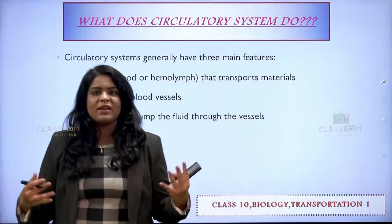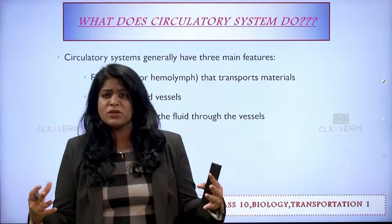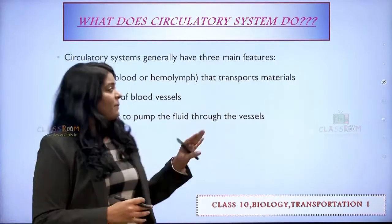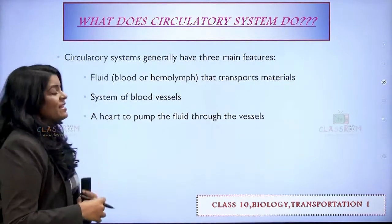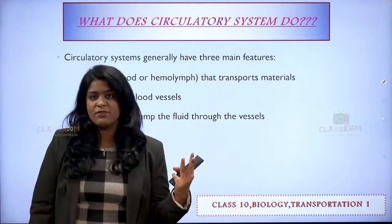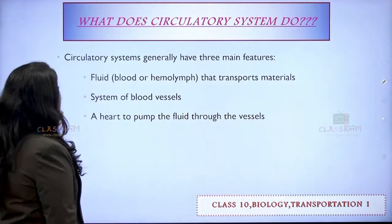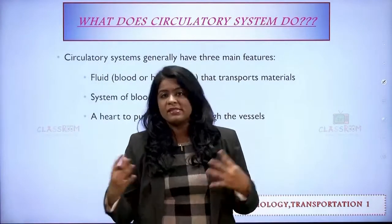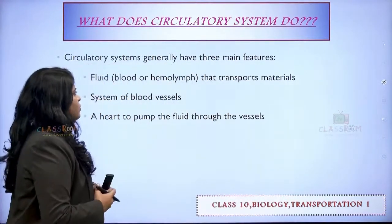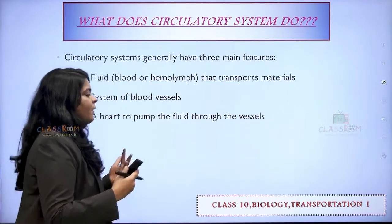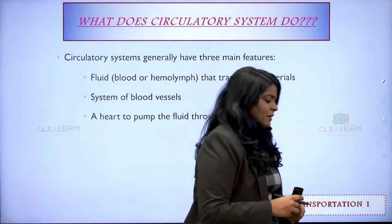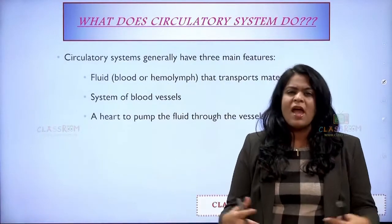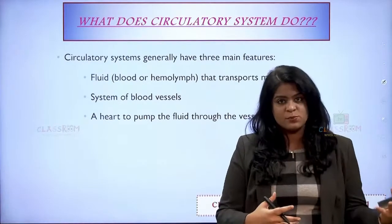Now, heart is a part of the circulatory system. When we hear about the circulatory system we think it's only about the heart, but that's not true. The circulatory system actually has three main features: the heart is definitely important, but the fluid as well as the blood vessels — that is arteries, veins and capillaries — are also part of it. The heart pumps both impure blood and pure blood.